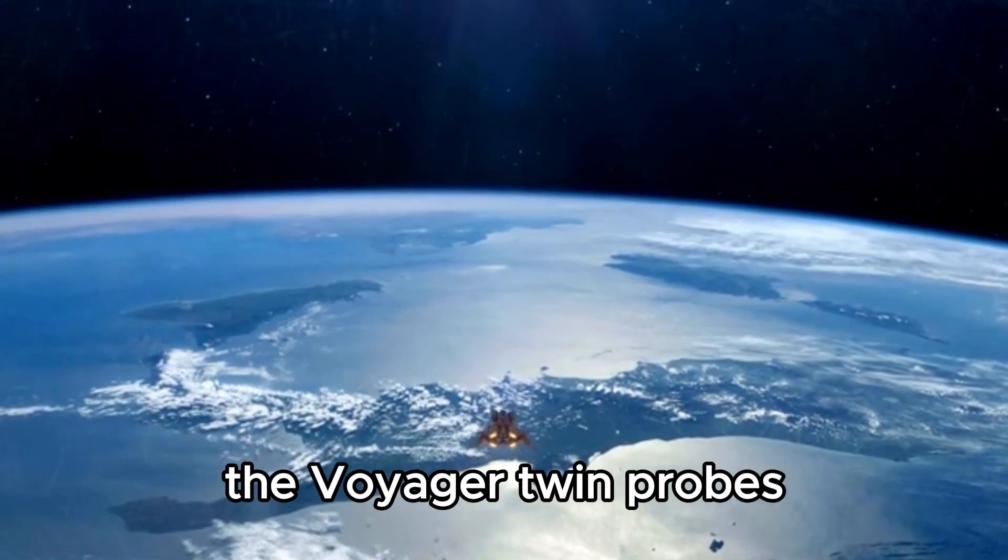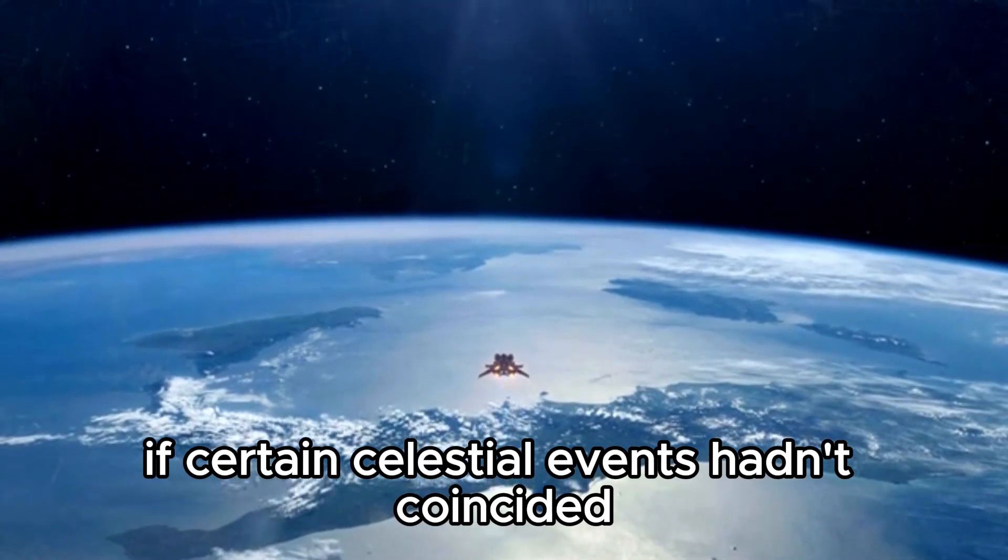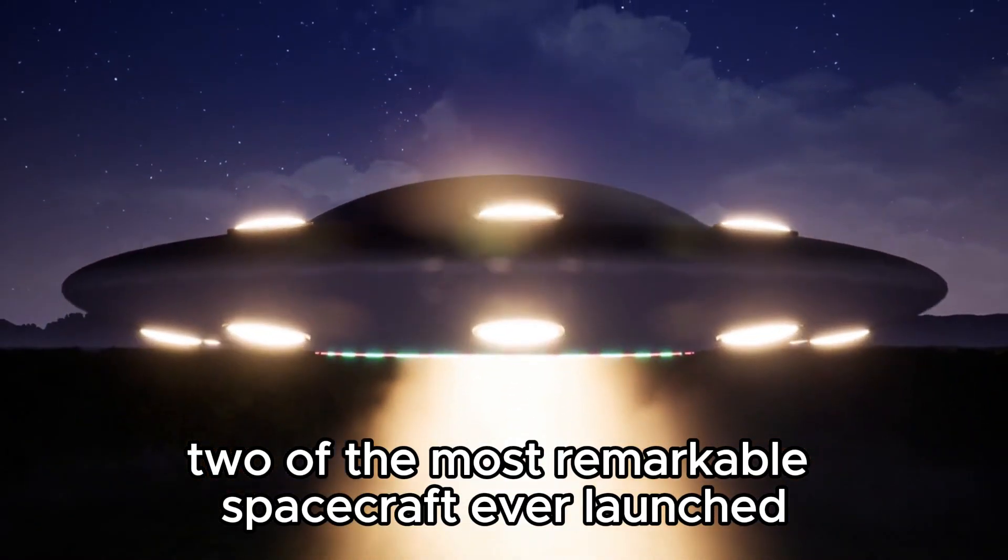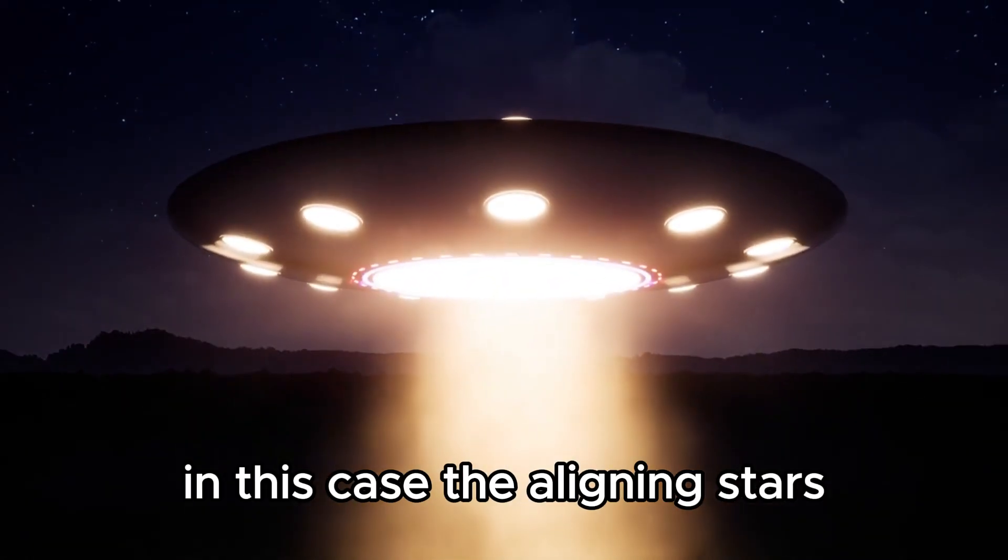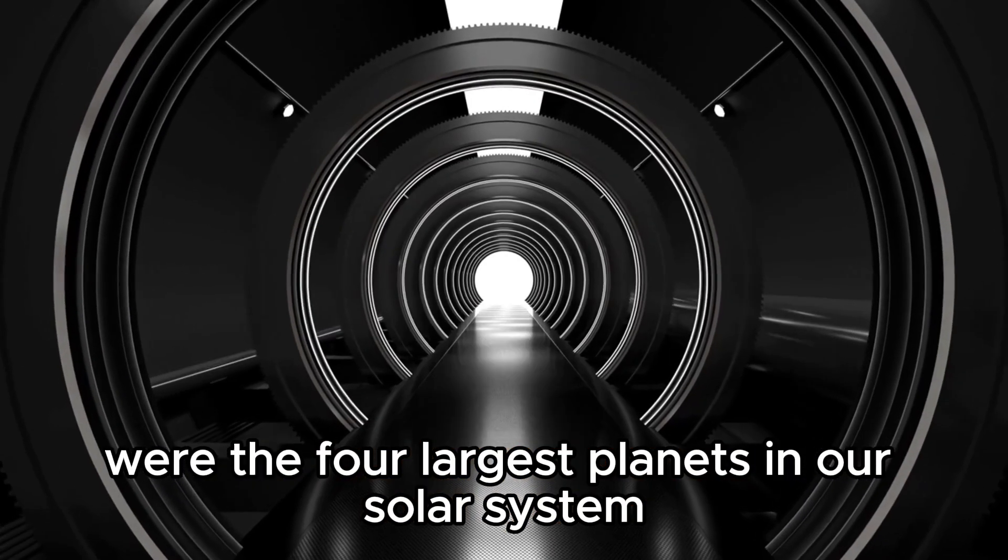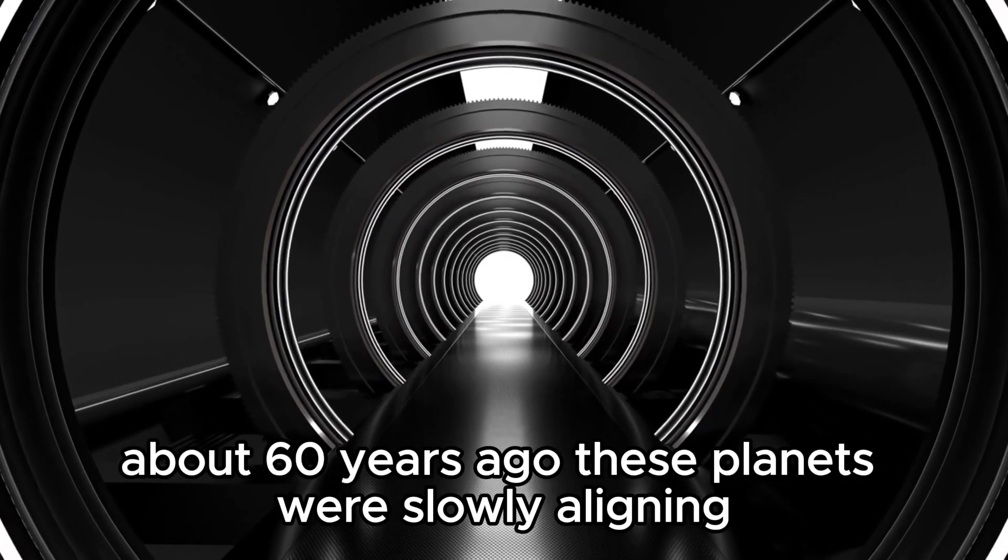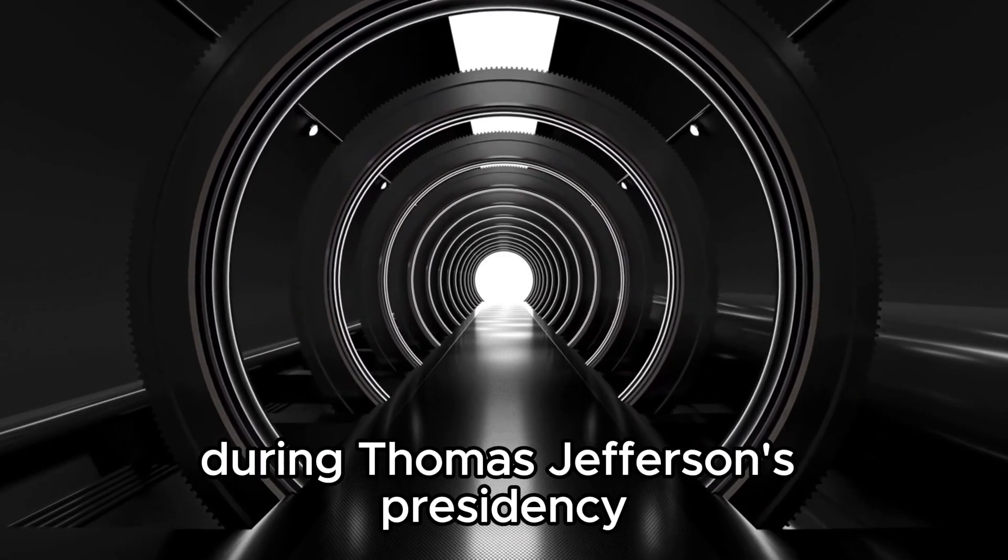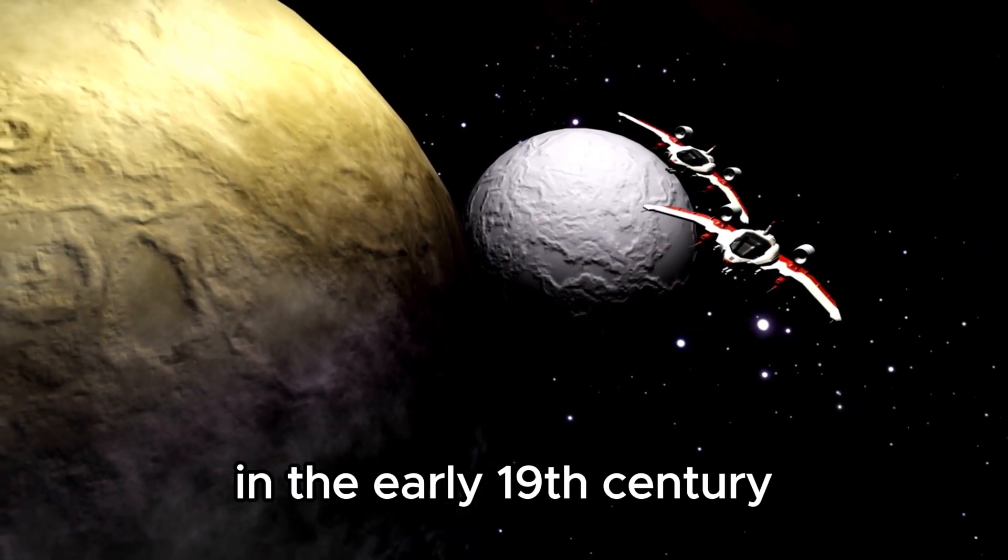The Voyager twin probes, if certain celestial events hadn't coincided, might never have left Earth. The aligning stars were the four largest planets in our solar system. About 60 years ago, these planets were slowly aligning in a way that had last occurred during Thomas Jefferson's presidency in the early 19th century.